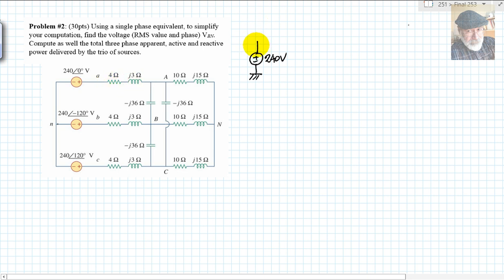And then in series with that in one phase we have 4+J3. Absolutely. So let's go for that. 4 ohms and J3 ohms, 4+J3.